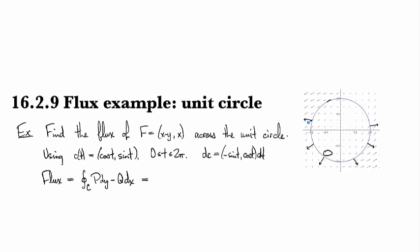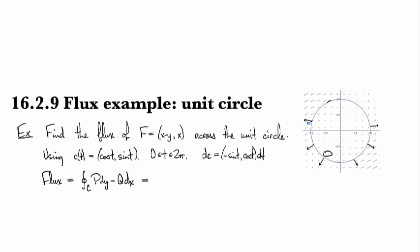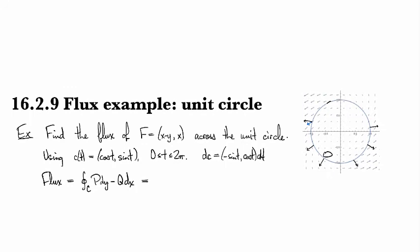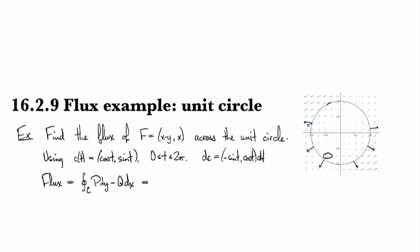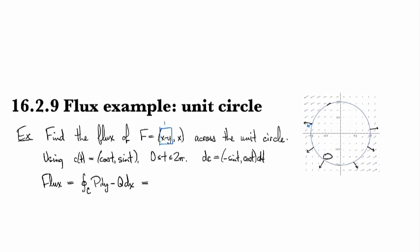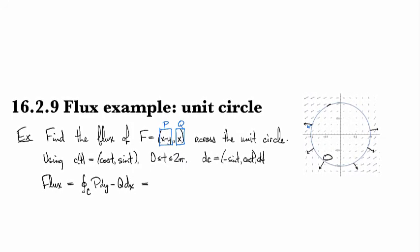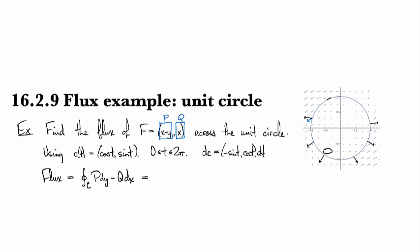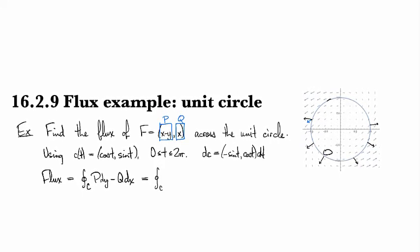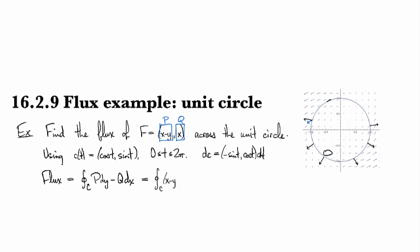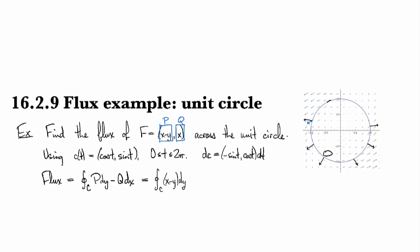So for us that's going to be, let's see, we've got this part here is P and this part here is Q. So we're going to have the integral over C of x minus y dy minus x times dx.